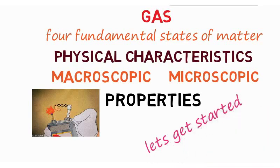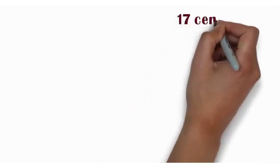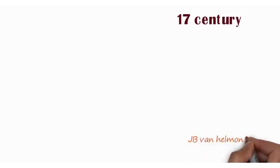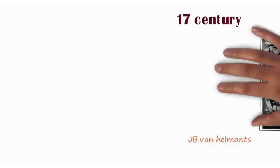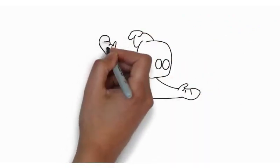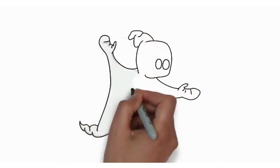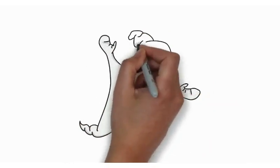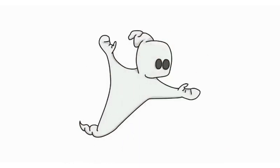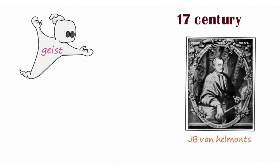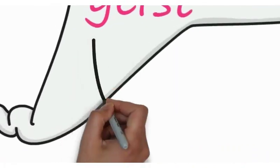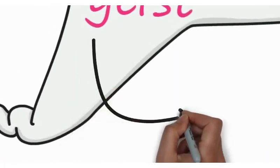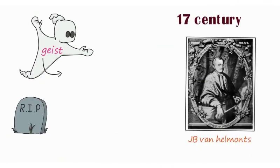First, we will discuss the history of gas. In the 17th century, John Baptist Van Helmont first used the word 'gas'. Van Helmont's word is corrupted from 'geist', meaning ghost or spirit. Some gases are dangerous and can cause death. At that time, people didn't know about this, and the word 'geist' converted to 'gas'.